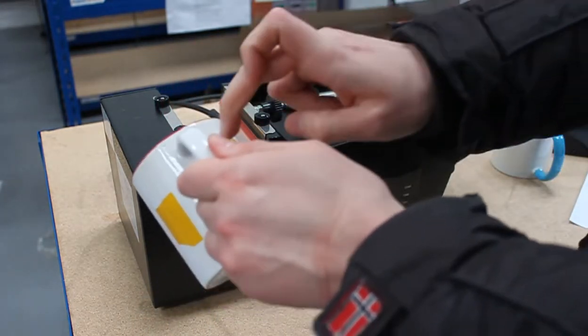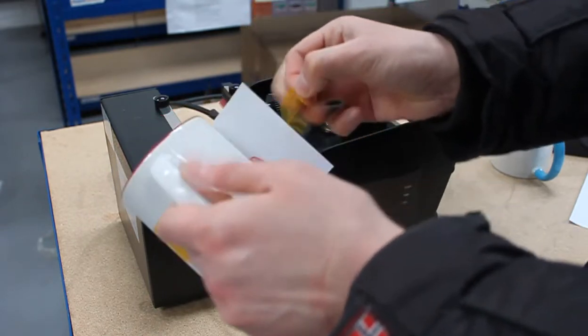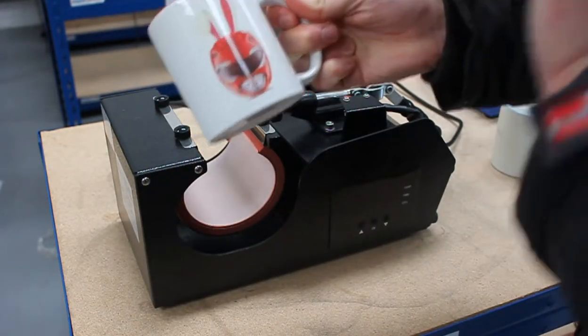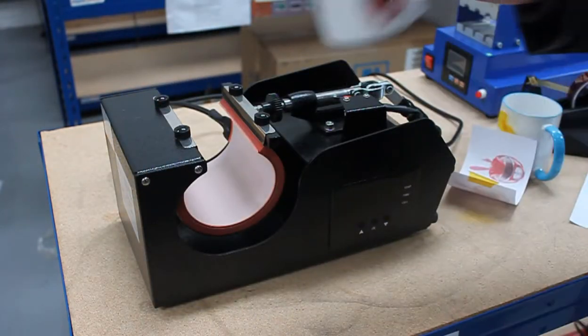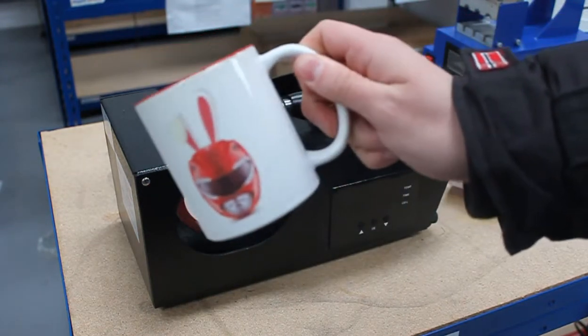At this point, you can just remove the tape. And that's it. This is how to sublimate a mug.